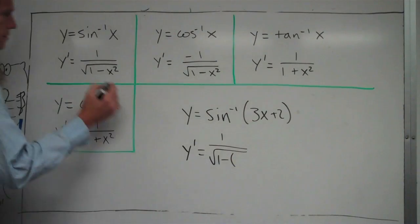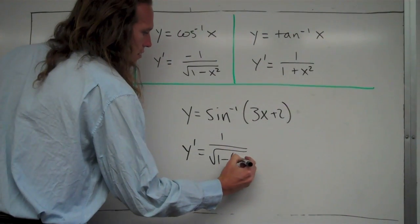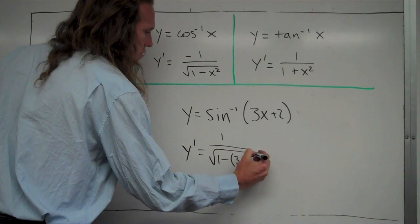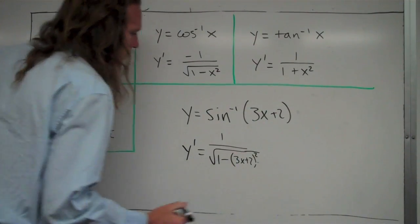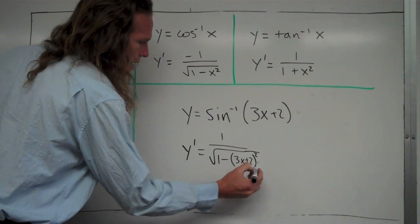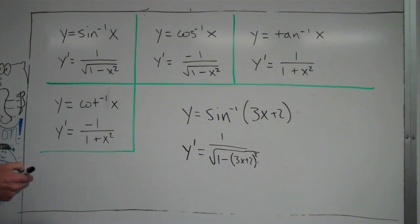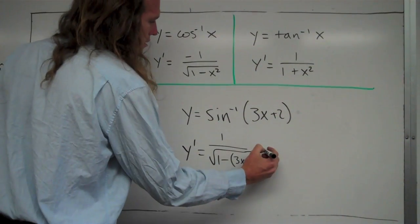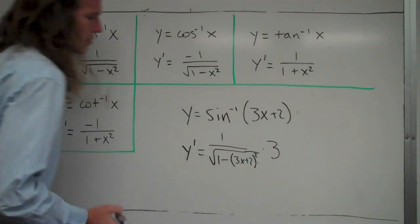and then again, instead of writing just x, I'm going to write 3x plus 2, 3x plus 2 squared. And since I'm using the chain rule here, since my inner function wasn't just x, now I have to multiply times the derivative of the inner function, which in this case is just 3, times 3.